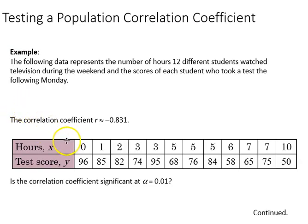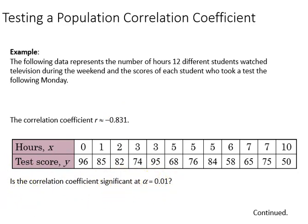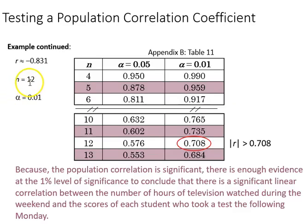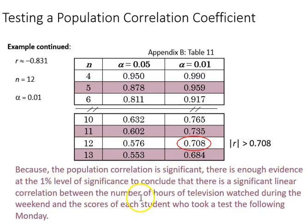Returning to our earlier example of watching television and test scores, we already determined the correlation coefficient in the sample is negative 0.831. Now we want to know: does that exist in the population? Can we generalize that at the alpha 0.01 level? From our table for 12 data pairs, at a 0.01 level we see that the cutoff is 0.708. Because 0.831 is larger, it is statistically significant. There is enough evidence at the 1% level to conclude there is a significant linear relationship between hours of television watching and test scores on Monday.